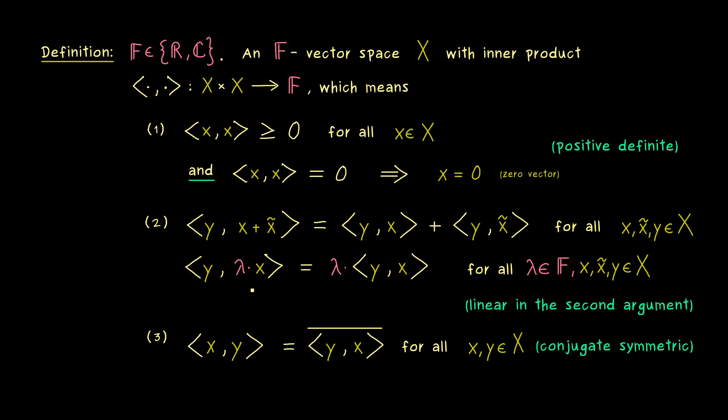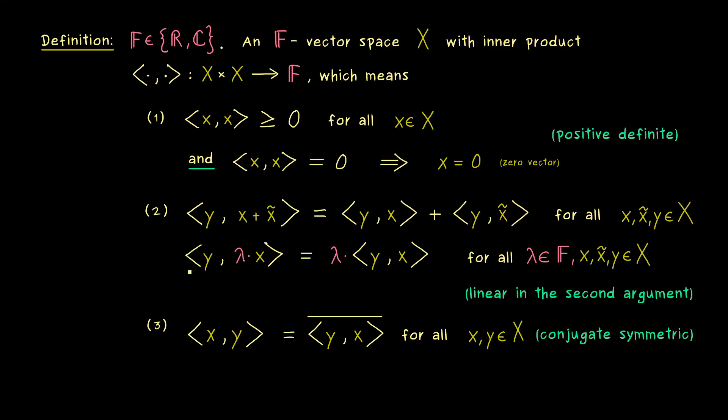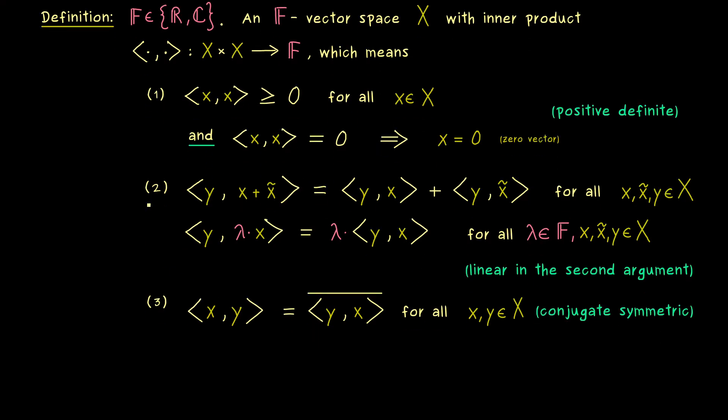Please keep that in mind. In the complex case the first argument and the second argument behave differently. Therefore it's also possible to switch the definition so that you claim the linearity in the first argument. In fact many mathematicians do that, but in this video series here we will exclusively work with this definition here. So this is an inner product and now we can finish our sentence here. A vector space with an inner product is called an inner product space.